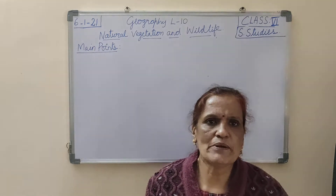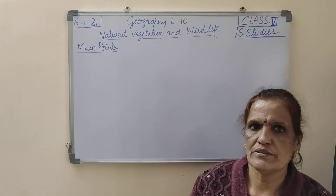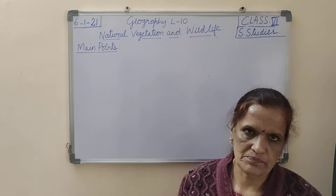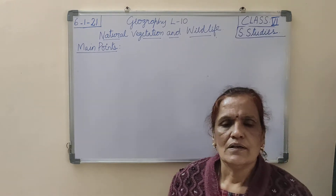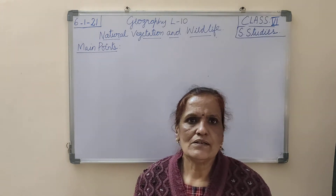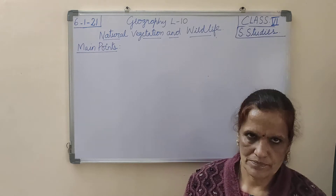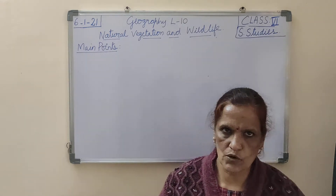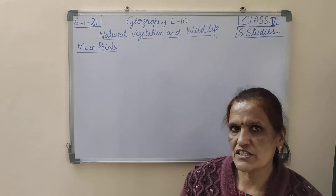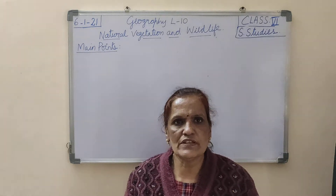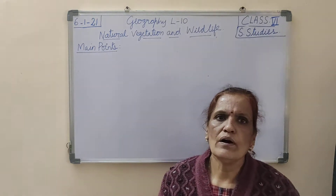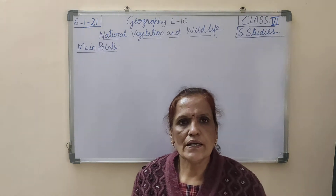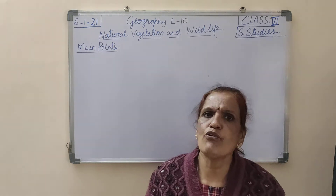Let me explain what is natural vegetation. Natural means what we get from nature. Trees which we plant in our home, in our school, around our house — that is not natural vegetation. Natural vegetation is trees which grow by nature, which grow in areas like forests.